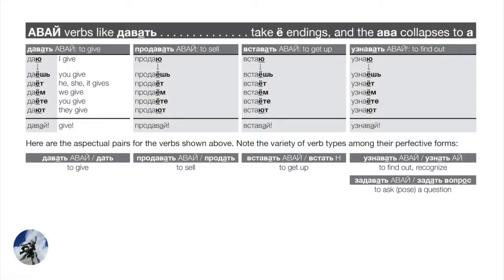Looking over the conjugation tables — we see four examples of авай-verbs. First: давать, which doesn't need a prefix at all. Now let's add a prefix: про — which means 'through' — gives us a new verb продавать, meaning to sell. The basic underlying verb is давать, so this new prefixed verb продавать is still an авай-verb and works exactly like давать: продаю, продаёшь, продаёт, продаём, продаёте, продают. Imperative: продавай.